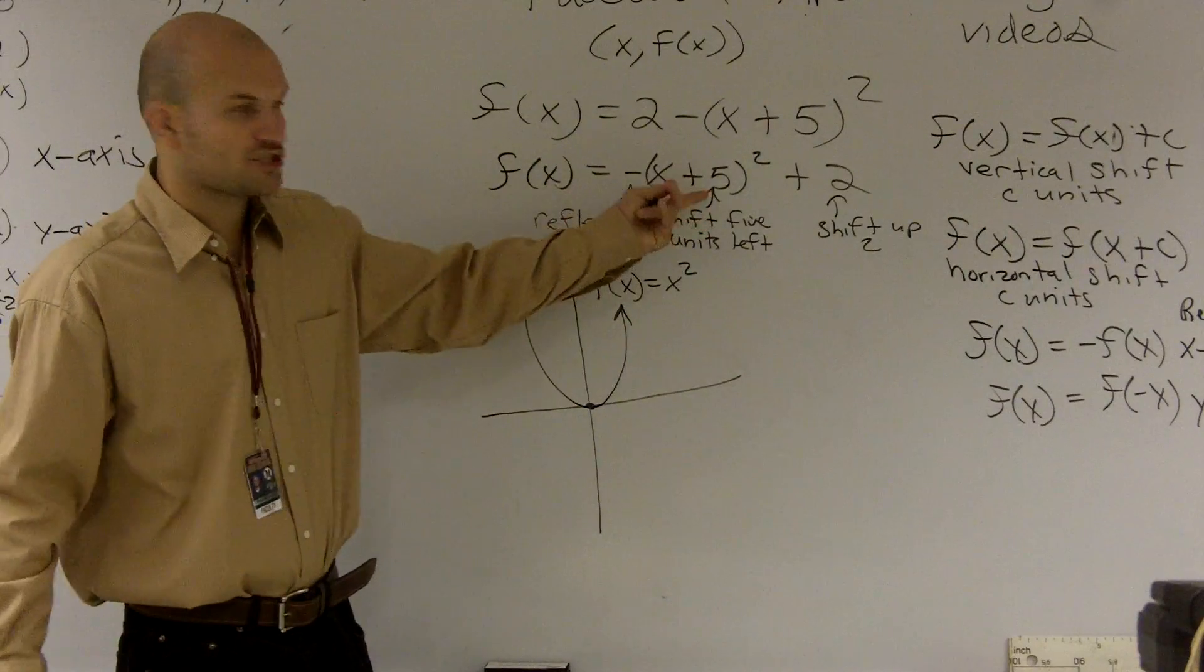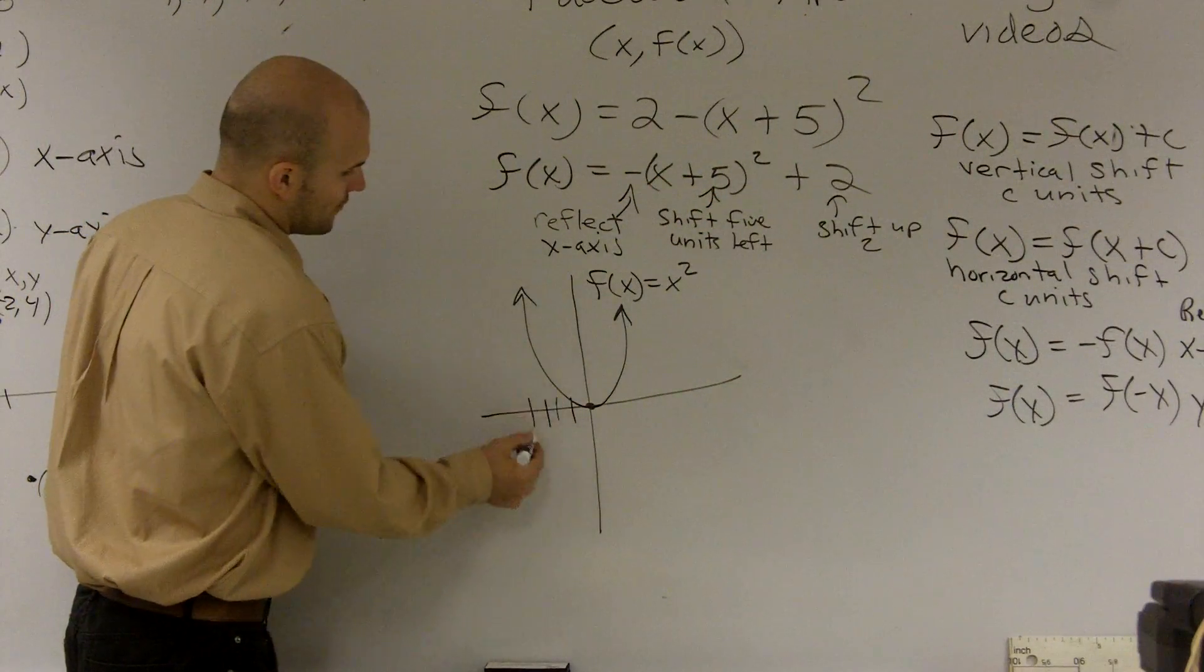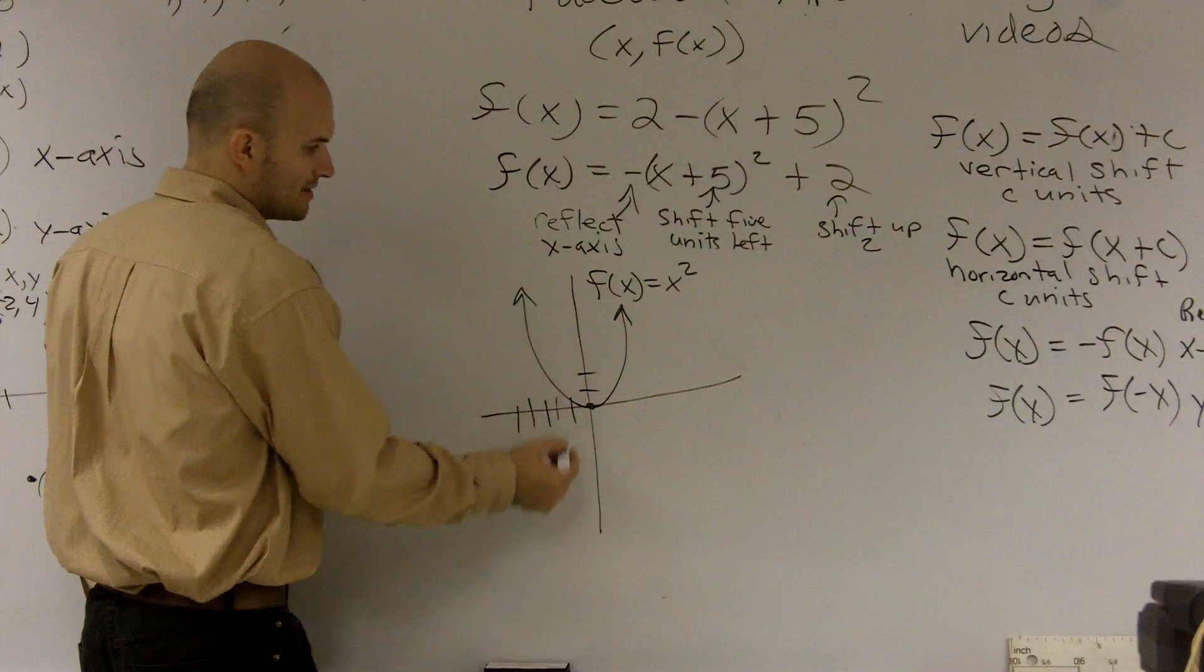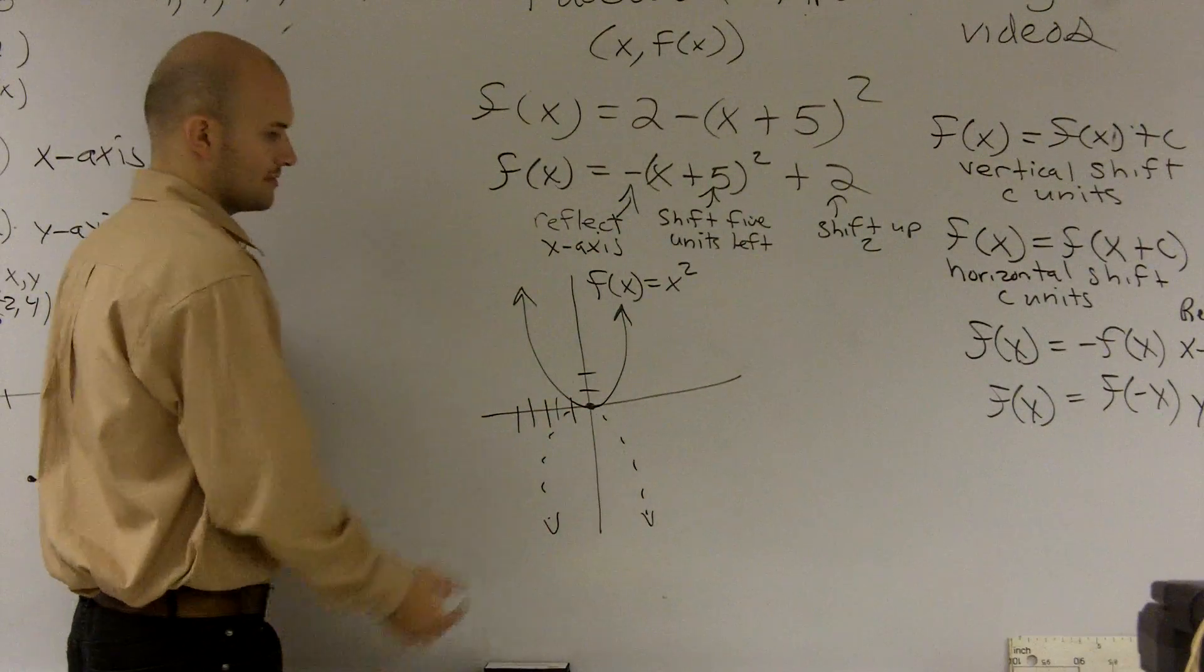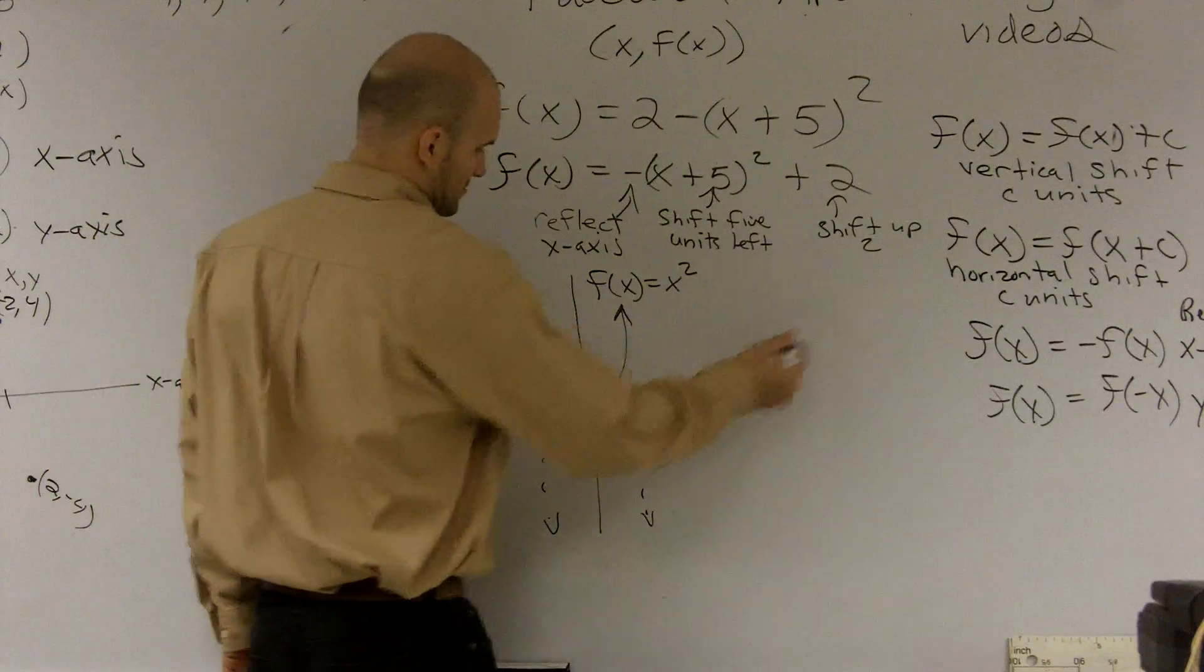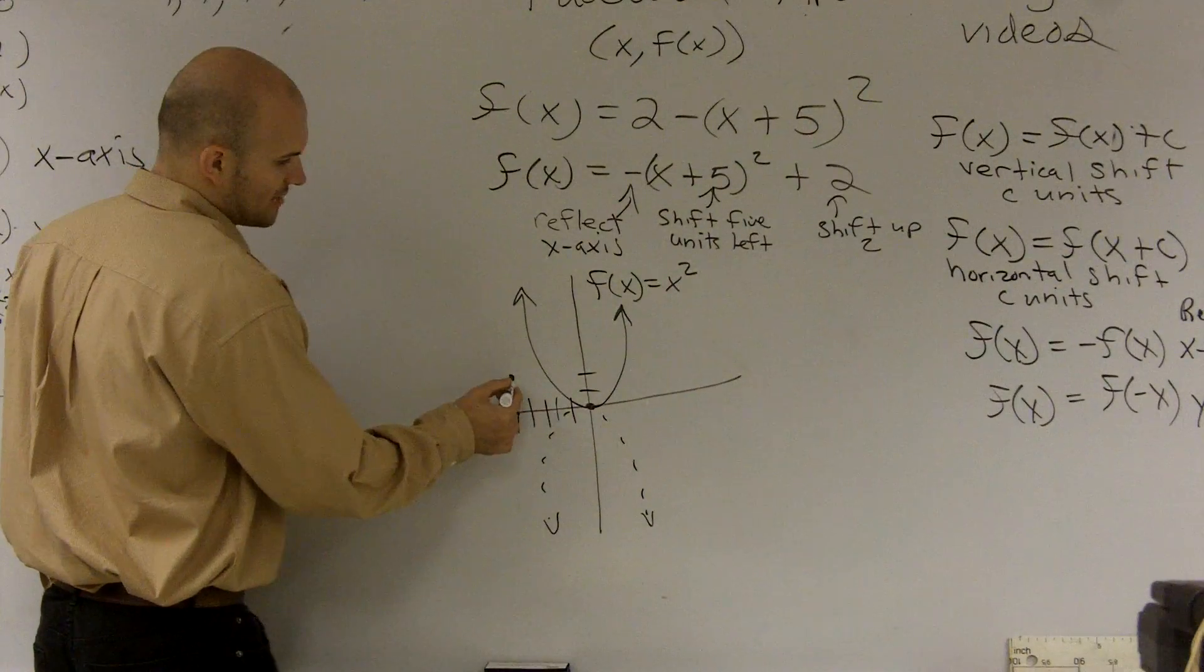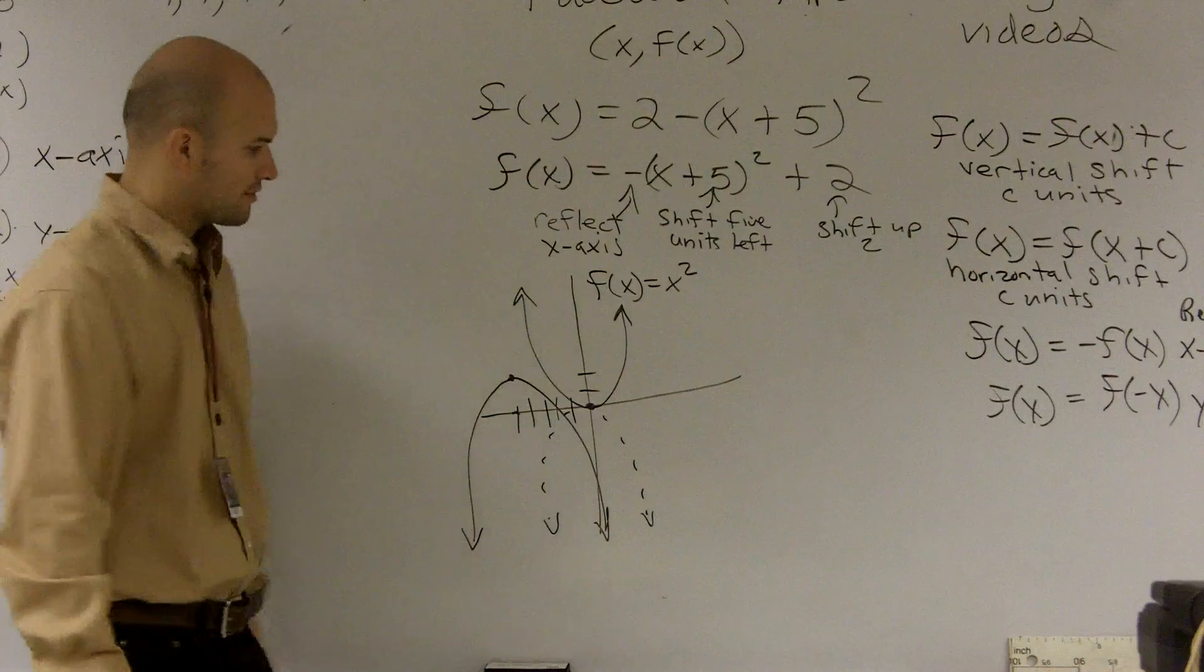So now what we need to do is just follow what our transformations are. Well, we're going to shift five units to the left. One, two, three, four, five. We're going to shift up two. One, two. And then we're going to flip it about the x-axis. So really, this point's going to move over here and up here. So if we move it over five, up two, and then it opens downward. So that's what my graph would look like.